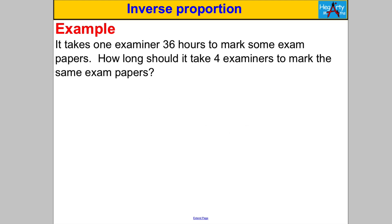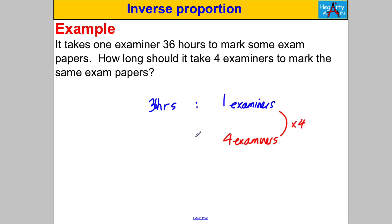Next one — pause and have a go. It takes one examiner 36 hours to mark some exam papers. How long would it take four examiners to mark the exam papers? If you had four times as many examiners, would it increase or decrease the time? It would obviously decrease it. So we don't multiply by 4 — we divide by 4. And 36 divided by 4 is 9 hours. Therefore the answer is 9 hours.